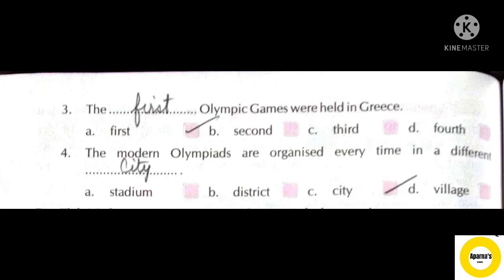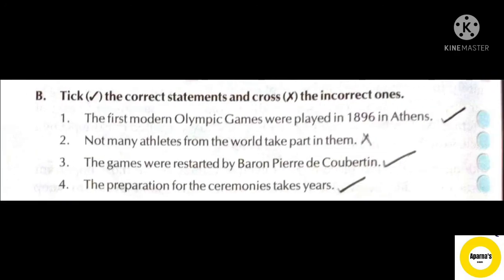Number 4: The modern Olympiads are organized every time in a different ___. The answer is option C: City. The modern Olympiads are organized every time in a different city. Next, take the correct statements and cross the incorrect ones. Number 1: The first modern Olympic Games were played in 1896 in Athens — Right. Number 2: Not many athletes from the world take part in them — Wrong. Number 3: The games were restarted by Baron Pierre de Coubertin — Right. Number 4: The preparation for the ceremonies takes years — Right.